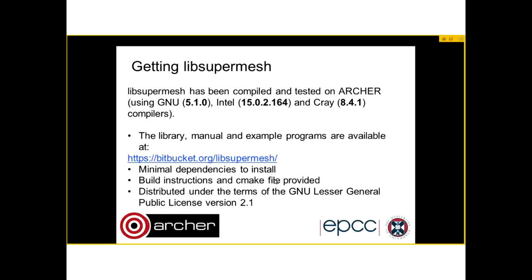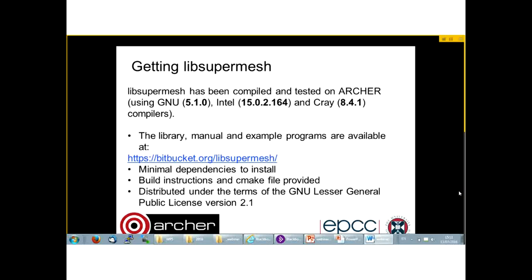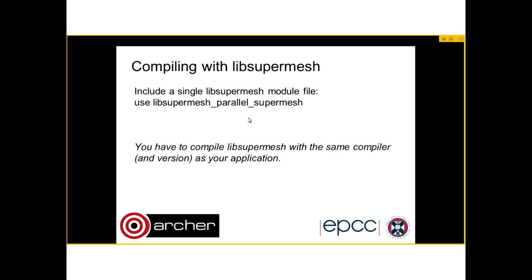LibSuperMesh can be compiled on Archer. It has been compiled and tested using the latest GNU, Intel, and Cray compilers and runs properly. It has been used with the GNU compiler and Fluidity, because Fluidity can only be compiled with GNU. You can get it from Bitbucket — it's very easy to install, and there is a manual of around 50 pages explaining how to use the library. Compiling with LibSuperMesh can be achieved using a single use keyword, with the caveat that you must compile LibSuperMesh with the same compiler and version, since it uses Fortran module files.